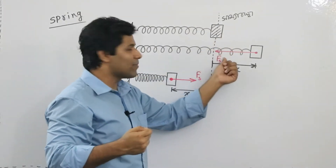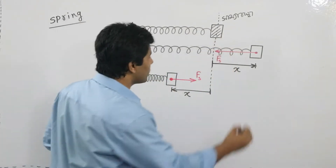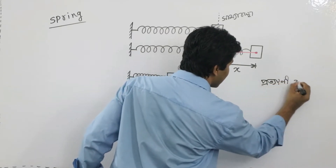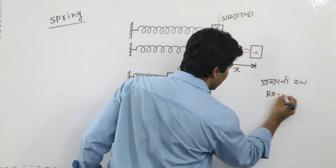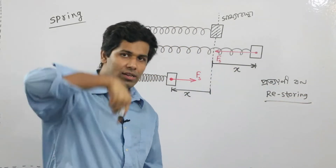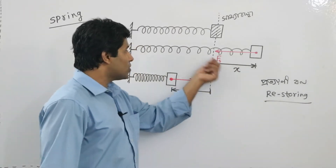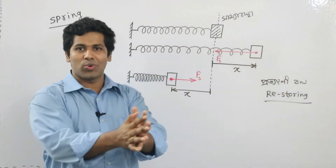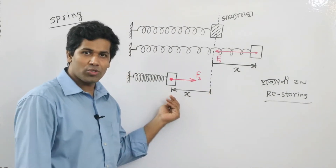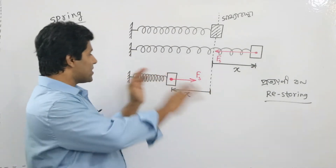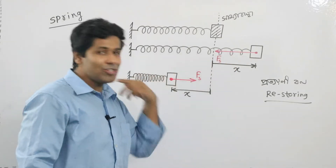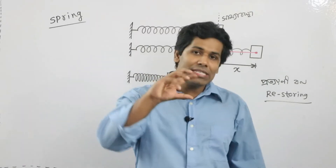This is the restoring force — the first notion of restoring force. In English, it is called the restoring force. The restoring force is stored in the spring. It is important to be able to store the springs and keep them.